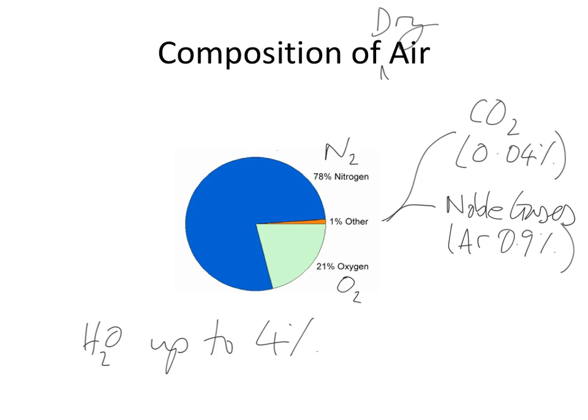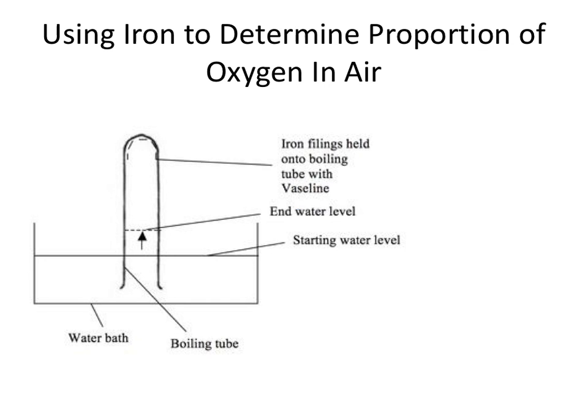Let's have a look at the experiments now to determine the proportion of oxygen in the air. So the first experiment is very simple really. What we've got here is a trough of water, or it could be a beaker of water, and an upturned boiling tube. In the end of this boiling tube, the diagram talks about using iron filings held onto the boiling tube with Vaseline.